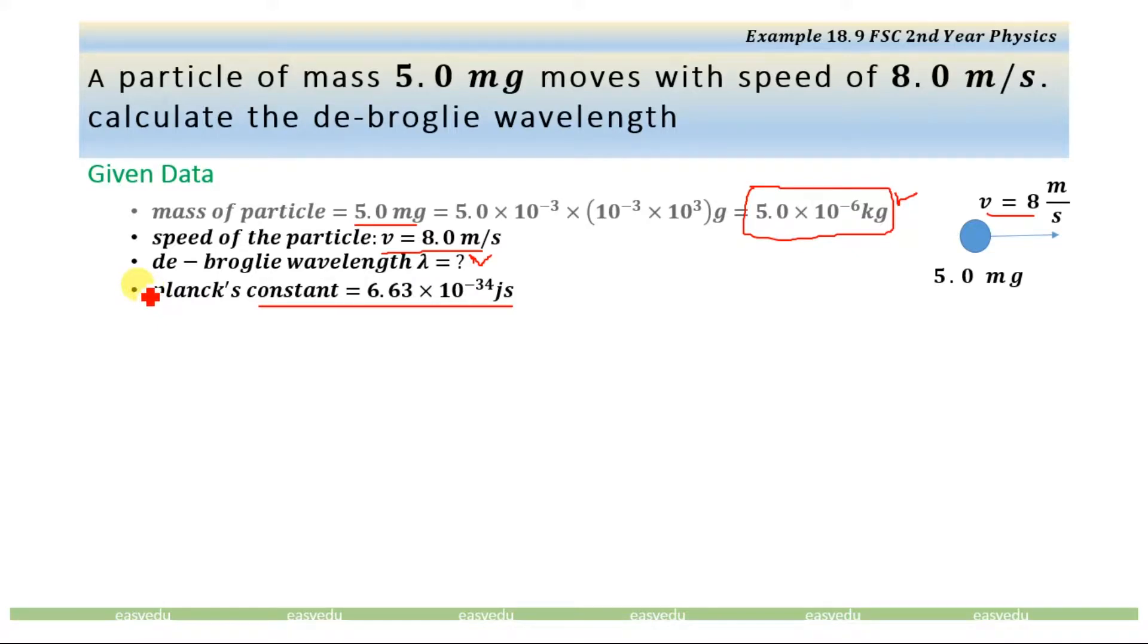We will use the de Broglie equation which is λ = h/p. Lambda is the wavelength associated with the particle which is moving with certain velocity. h is the Planck's constant and p in this equation is momentum. And we know that the momentum is mass times velocity, mv.